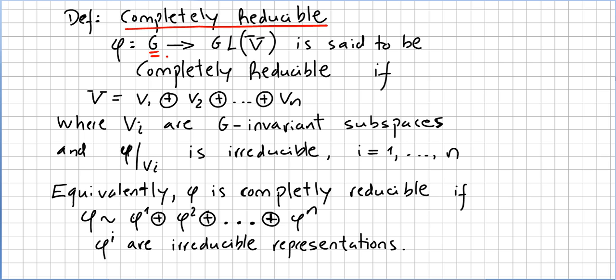The concept of completely reducible. So if G is a group, we take a representation phi from G to the general linear group and this representation is said to be completely reducible if the vector space can be decomposed in direct sums of subspaces V1, V2, ... Vn and all these are G invariant subspaces.